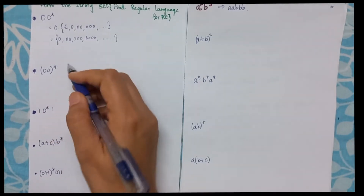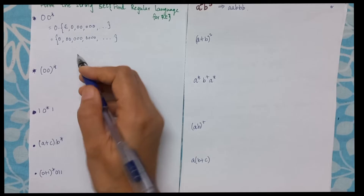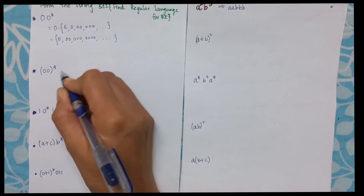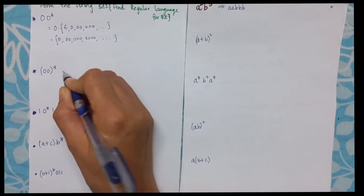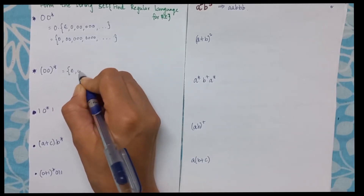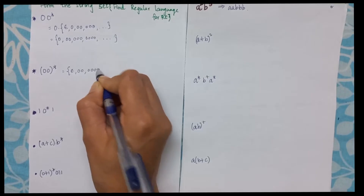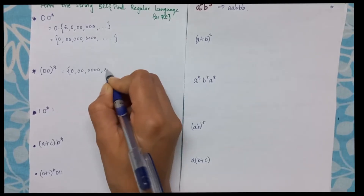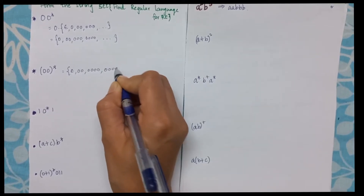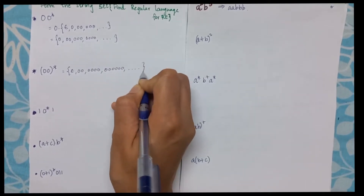Consider if I have 00*. This indicates an even number of zeros. So I will have epsilon, 00, four zeros, six zeros, and so on.